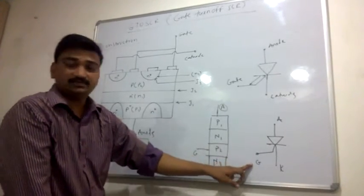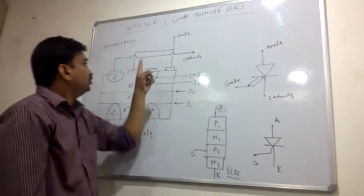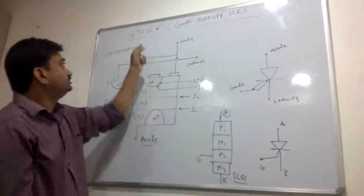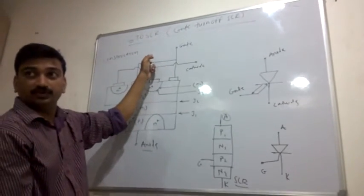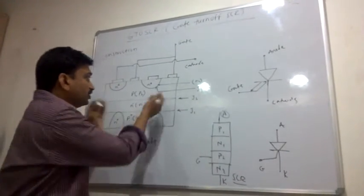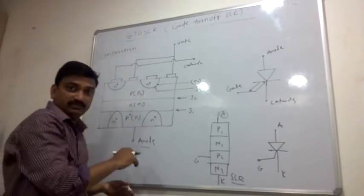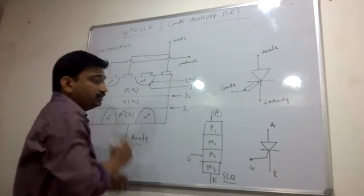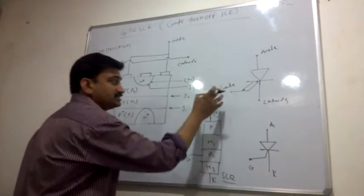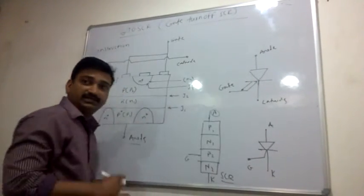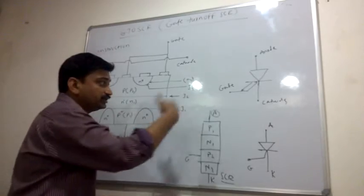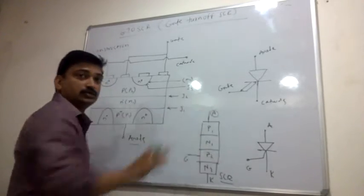While studying the construction of GTO, it is important to understand why the modifications are done — to achieve the purpose of turning off the SCR by triggering the gate. The gate can trigger the SCR to turn off.